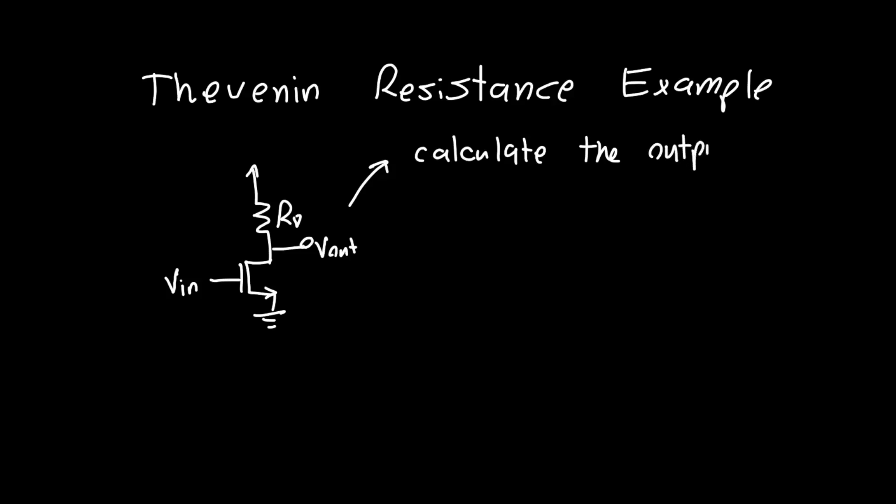Calculate the output resistance of this circuit. We know how to do that - we attach a test voltage V_x to the output, and we want to measure the current flowing through it. But what about the input here? What do we do with that?